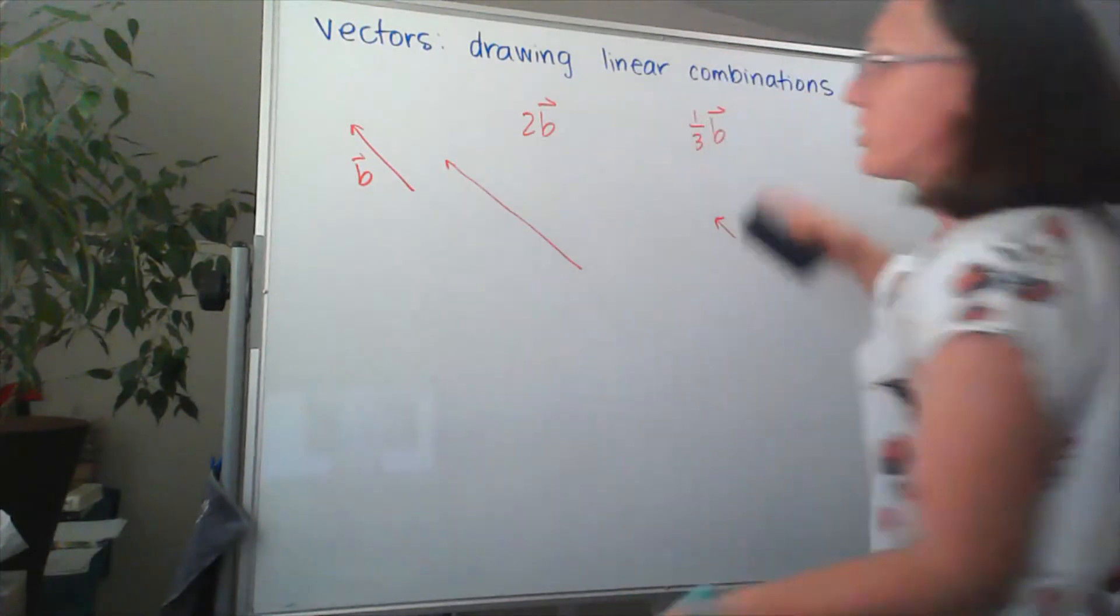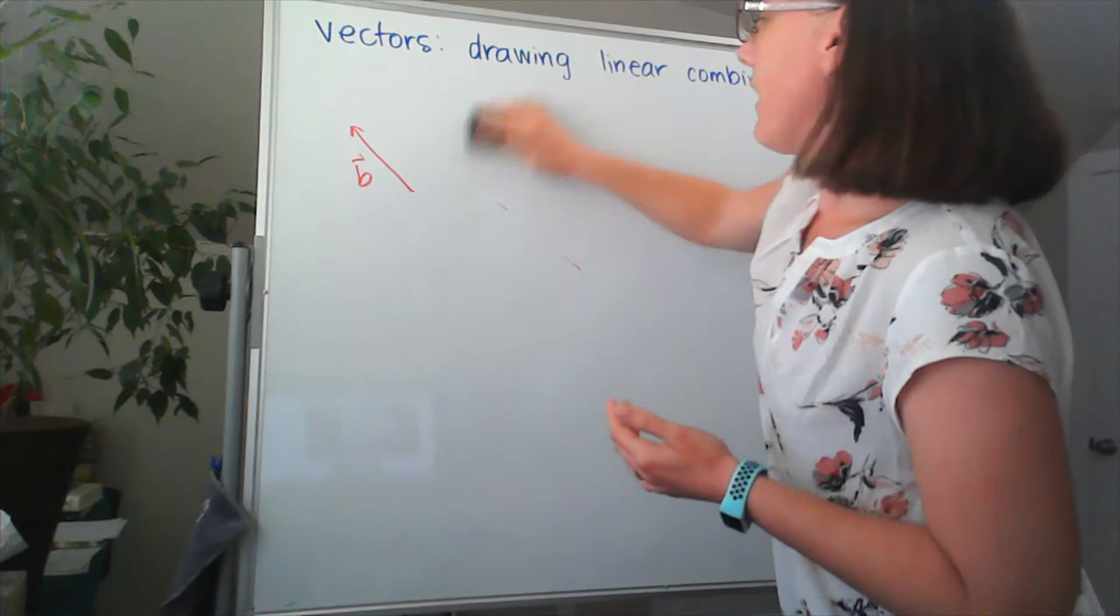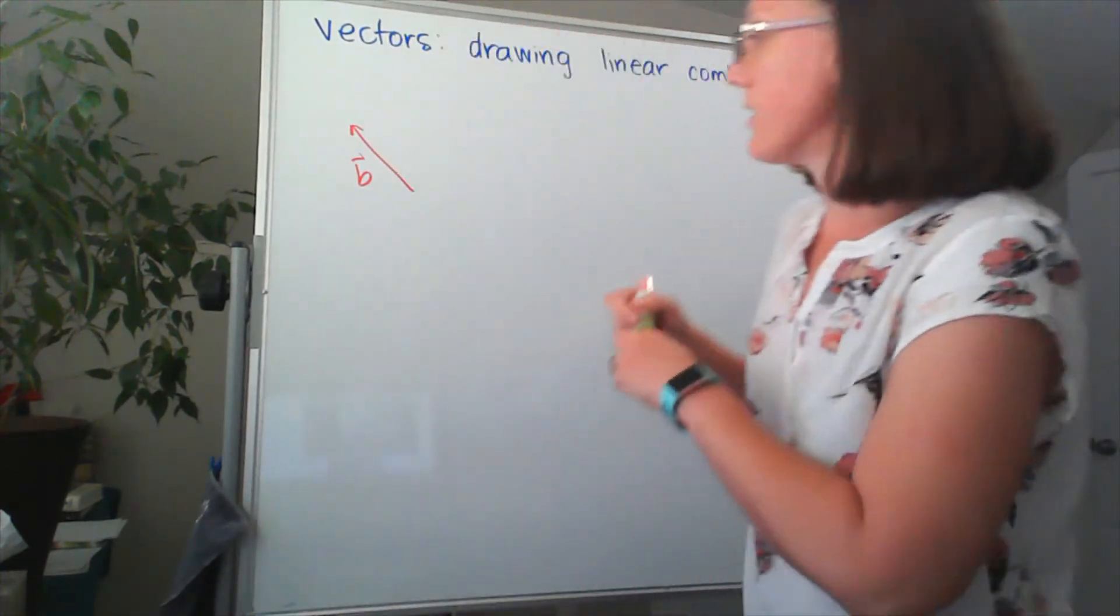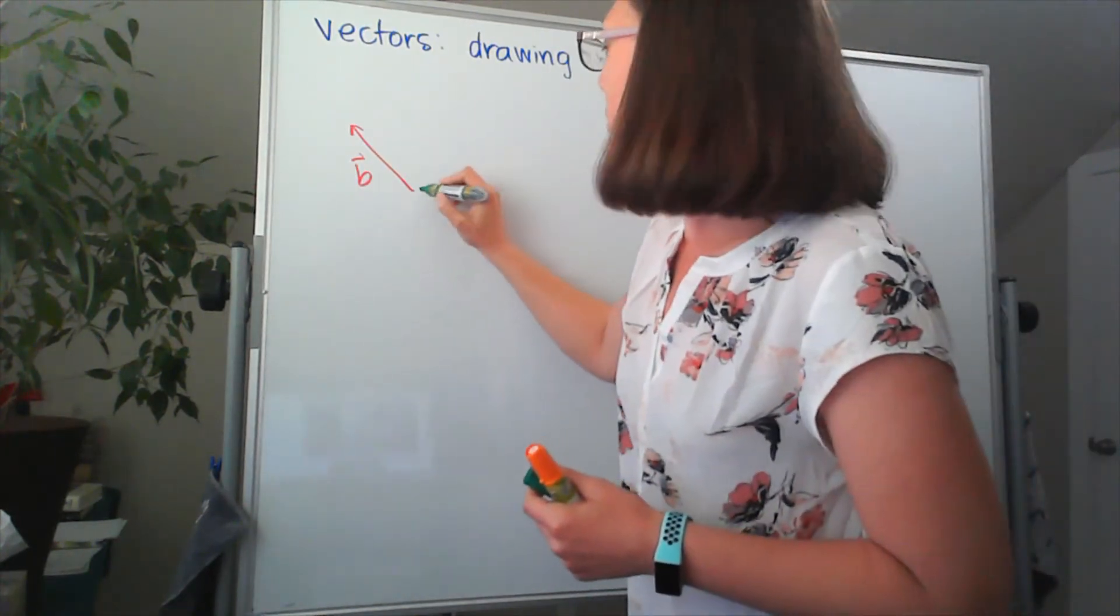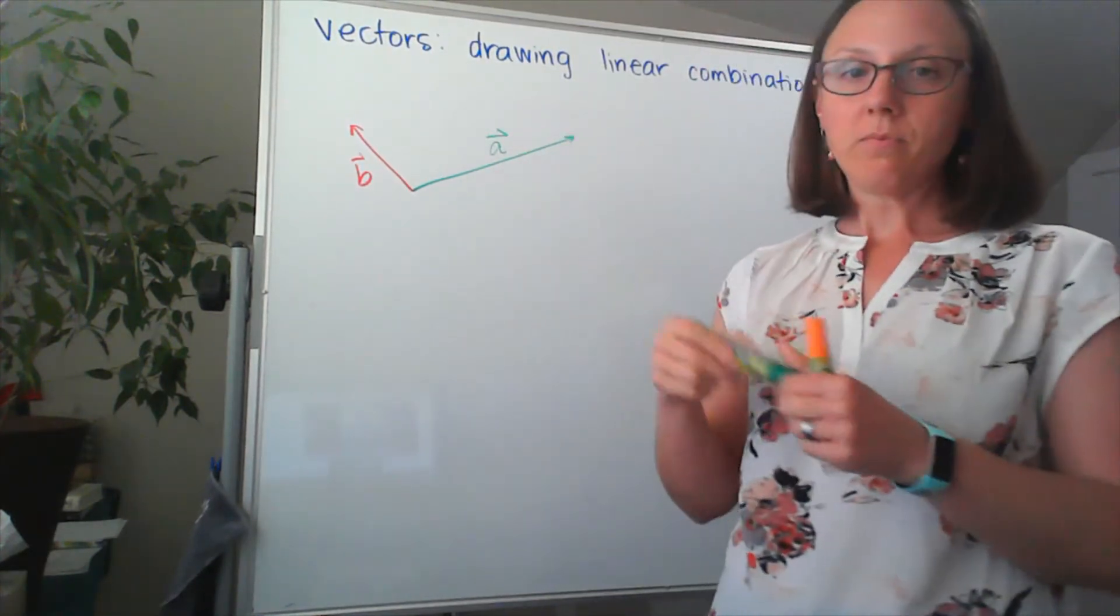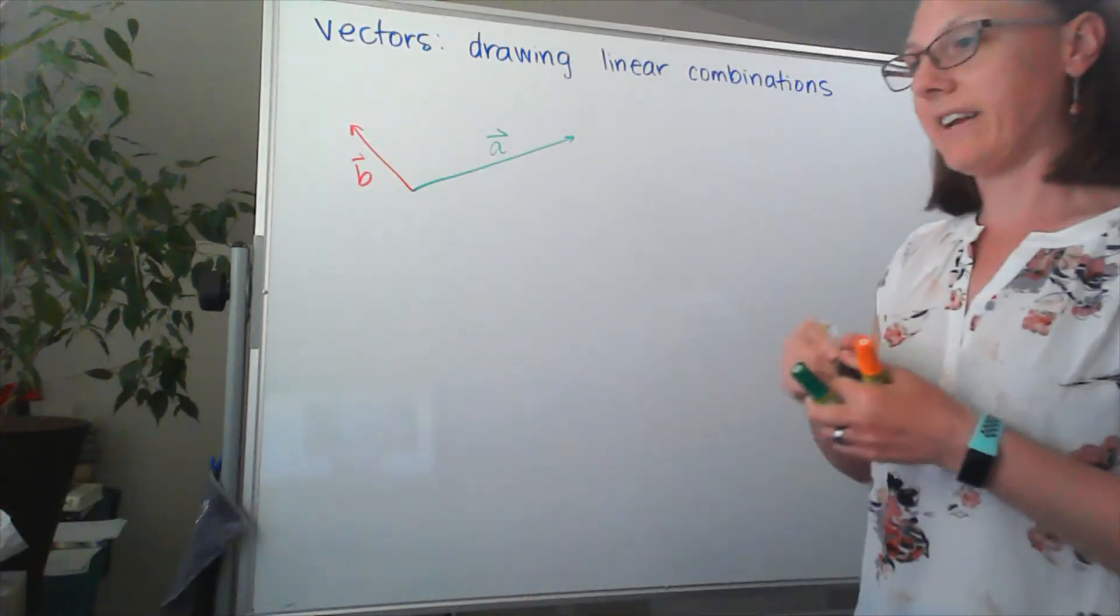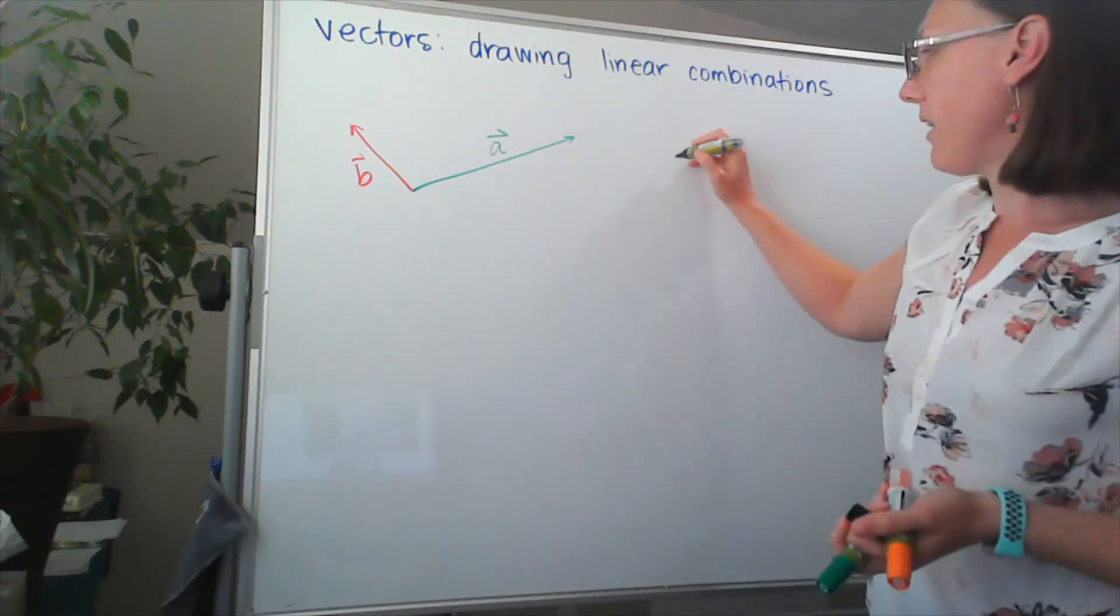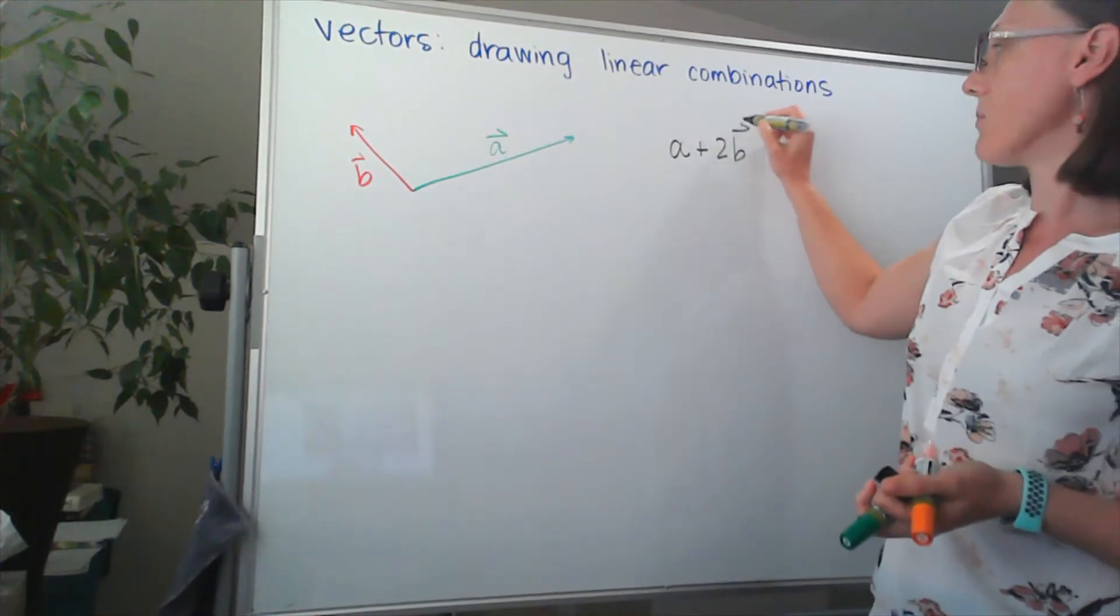Now, I also mentioned drawing linear combinations of vectors. And that means that I need two vectors. So there's my vector B. And let's get another vector and call that vector A. So maybe I want a linear combination that looks like A plus 2B.